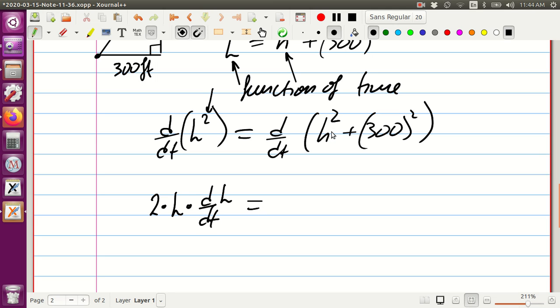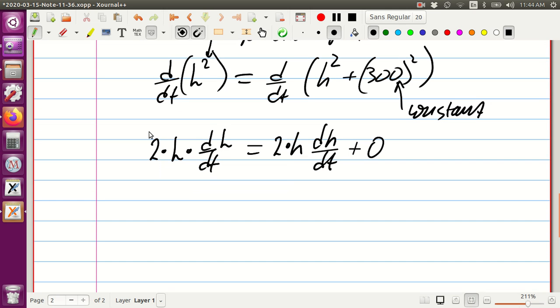Now we're moving to the right side. Derivative of h squared will follow the similar structure as for L squared. So two goes down, then h, then dh/dt. And this term is a constant, so the derivative of a constant will be zero.